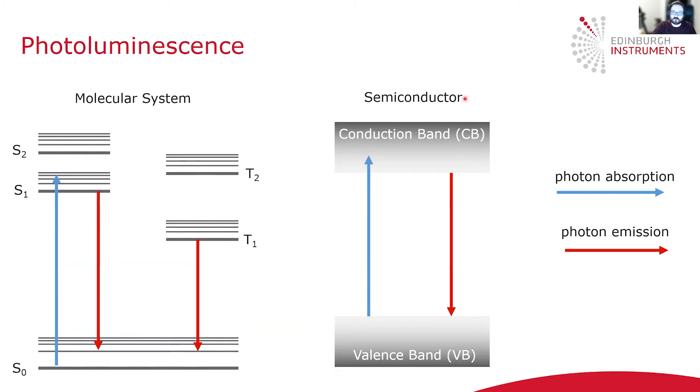Photoluminescence also commonly occurs in semiconducting materials where absorption of a photon promotes an electron from the valence band to the conduction band, and the radiative relaxation back to the valence band results in the emission of a photon. This is also photoluminescence.